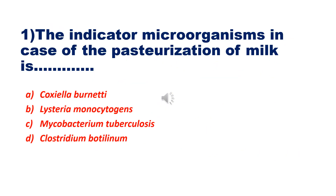According to the first module, the first question we are going to discuss is question number one: The indication microorganism in the case of pasteurization is? It is asking which microorganism is the indicator of pasteurization of milk. The options are Coxiella burnetti, Listeria monocytogenes, Mycobacterium tuberculosis, Clostridium botulinum.